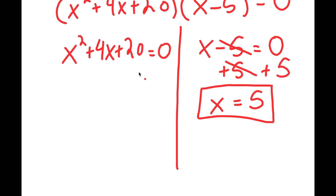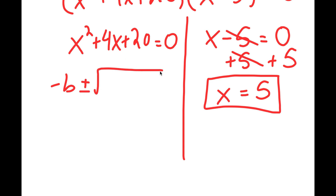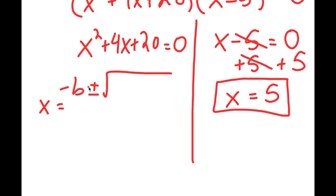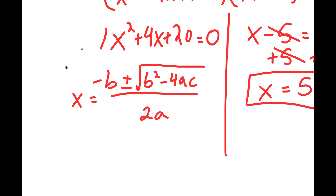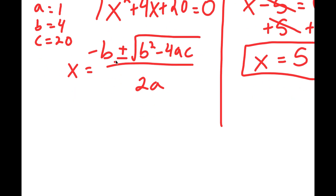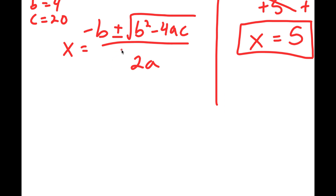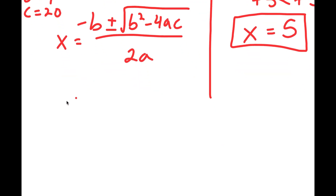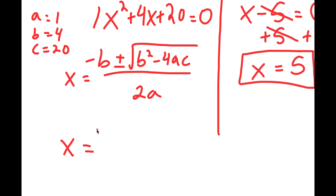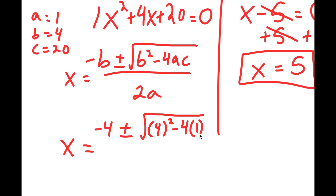Now for x squared plus 4x plus 20 equals 0, I can use the quadratic formula. The quadratic formula is negative b plus or minus the square root of b squared minus 4ac, all over 2a. In this case, a is 1, b is 4, and c is 20. So I can plug these in: x equals negative 4 plus or minus the square root of 4 squared minus 4 times 1 times 20, all over 2 times 1.